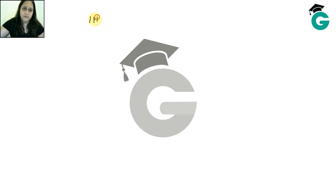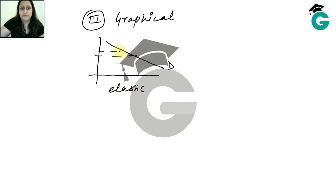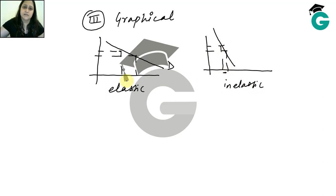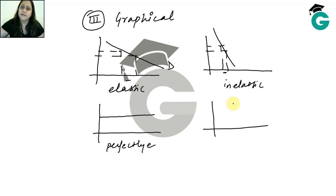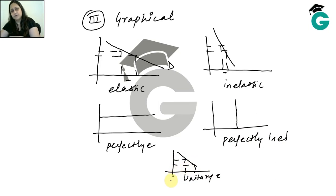The third method is the graphical method. We assess elasticity based on the shape of the demand curve. A very flat demand curve means elastic demand — a small change in price causes a large change in quantity. A very steep demand curve means inelastic demand. A completely horizontal curve is perfectly elastic, a completely vertical curve is perfectly inelastic, and a 45-degree curve is unitary elastic.